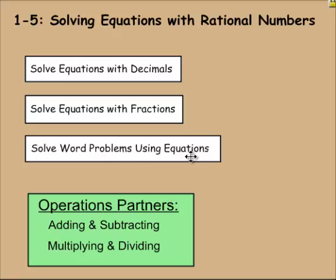One thing that we always need to keep in mind when we do equations is that there are operations partners, meaning that these things cancel each other out. When you add and subtract, they cancel out. Let's say you have 0 to start. If you add 5 and then subtract 5, you're going to be right back at 0.